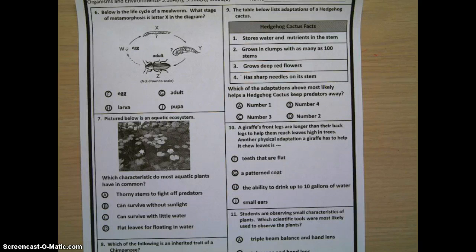Two, grows in clumps with as many as 100 stems. Three, grows deep red flowers. Four, has sharp needles on its stem. Which of the adaptations above most likely helps a hedgehog cactus keep predators away?